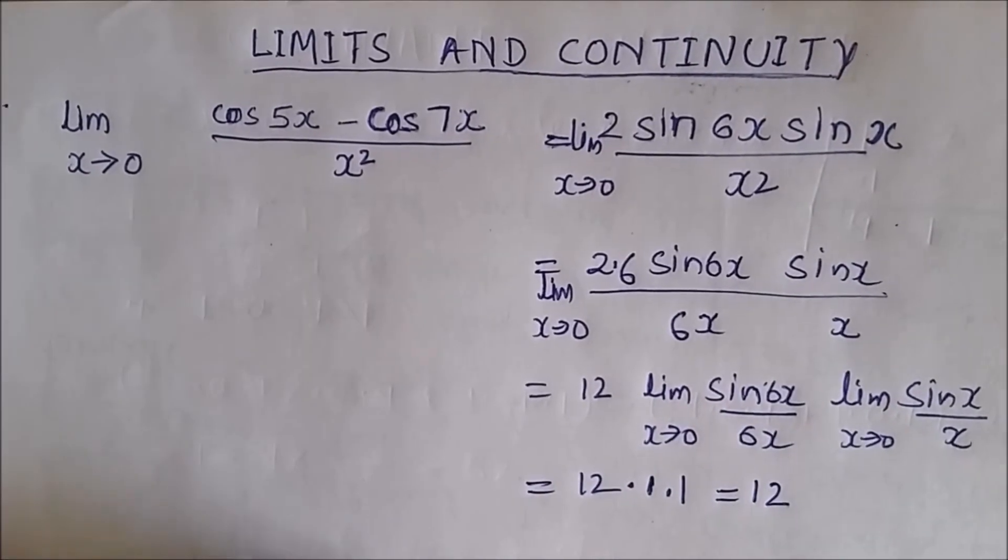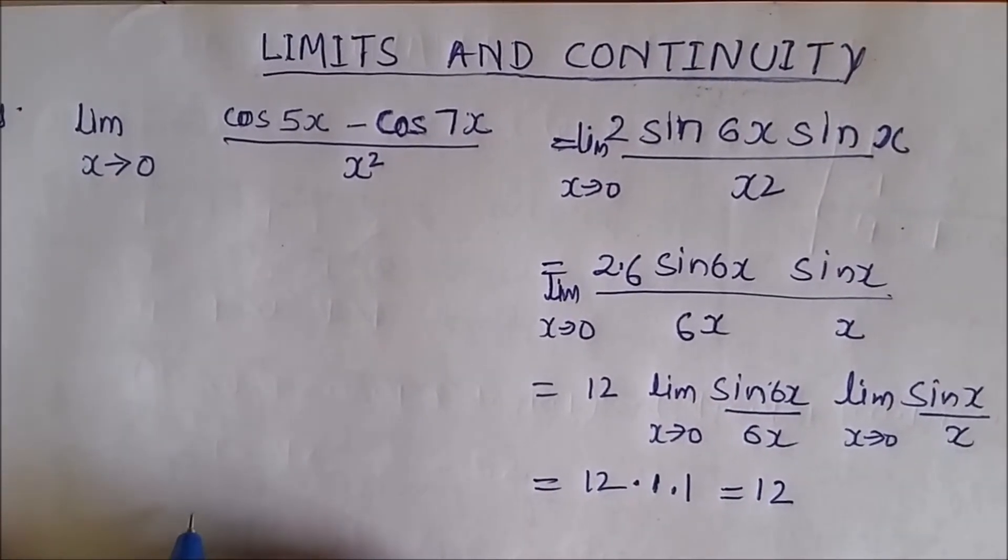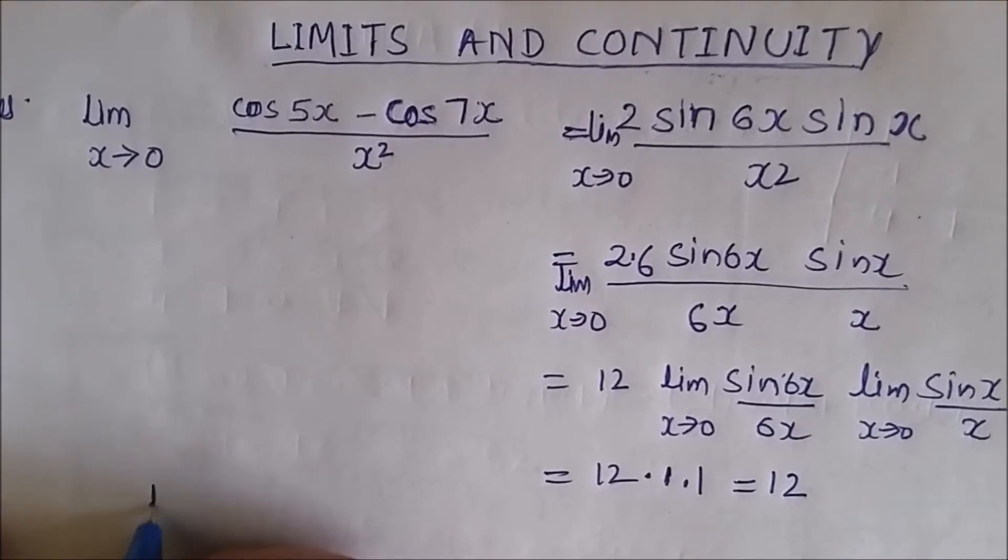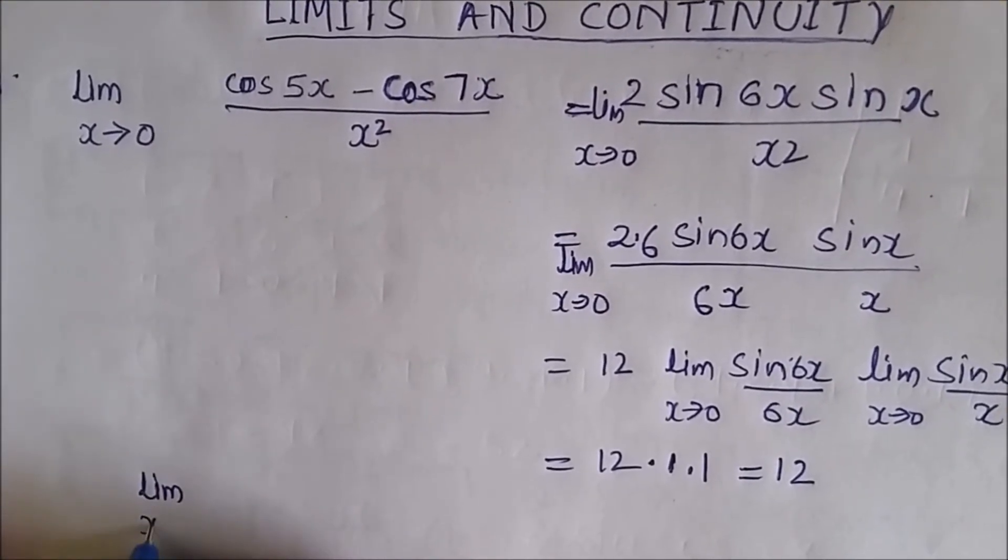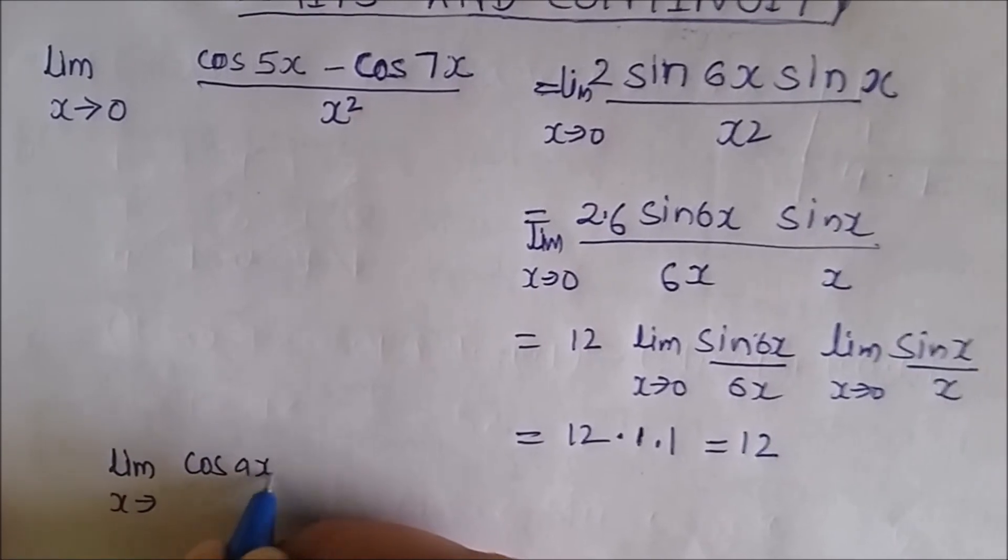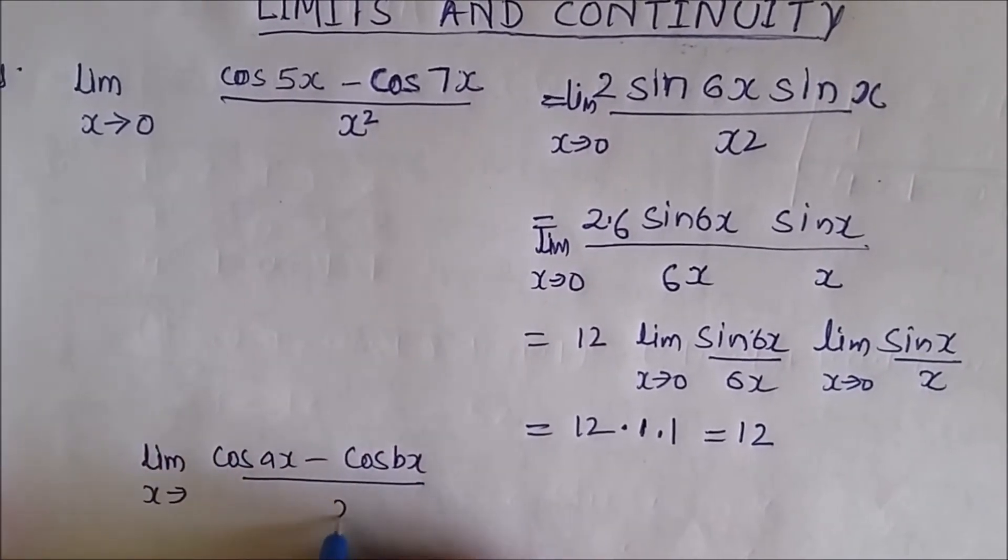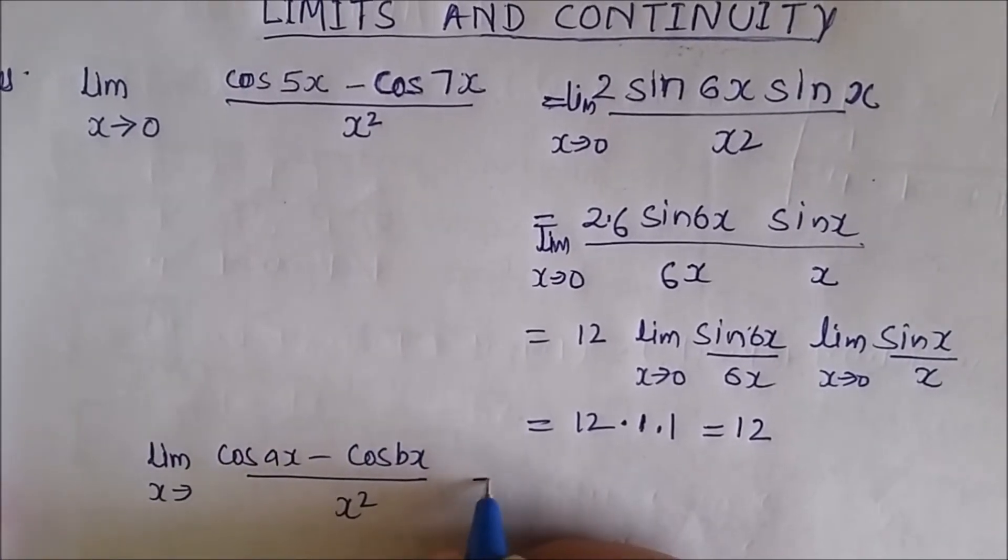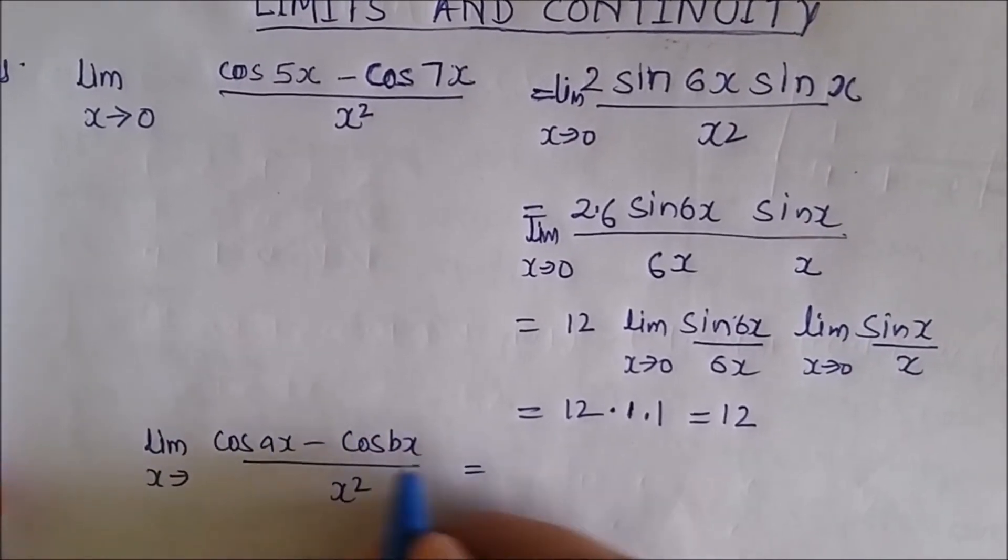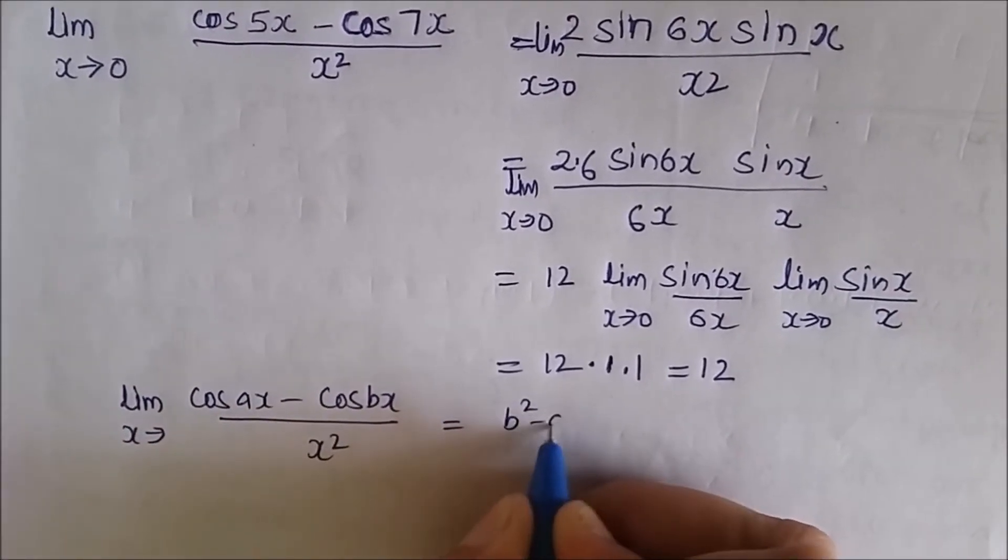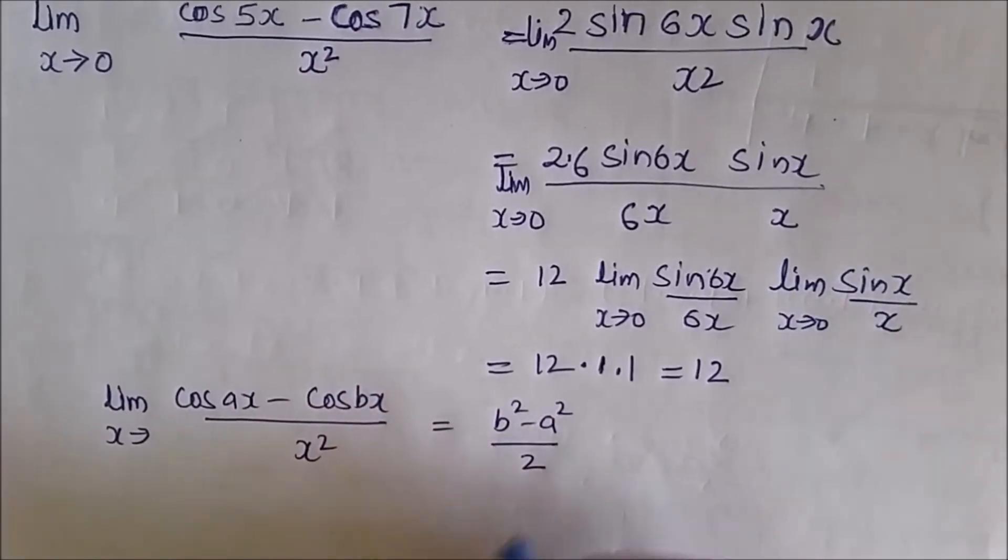For this question let me write the general formula first. If you have a question of this type: limit x tends to 0, (cos ax - cos bx) / x², if you come across this type of question, directly you can write the answer. This is (b² - a²) / 2.